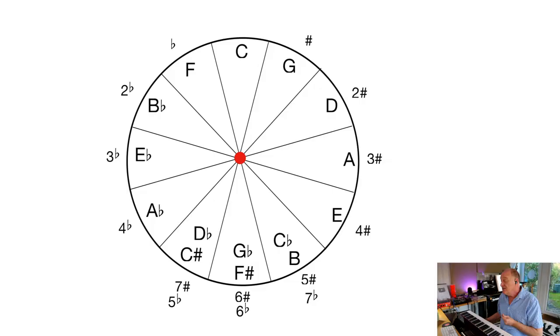There it is laid out. And you can see when you get to the overlapping bit at the bottom, it's a right car crash, because C sharp and D flat overlap — one has five flats, the other has seven sharps. You can see it's a real mess at the bottom. Don't worry about that for the time being.